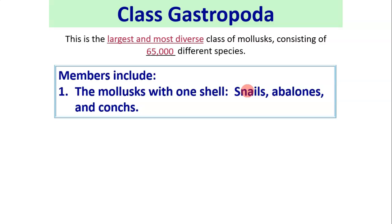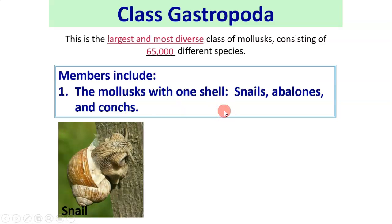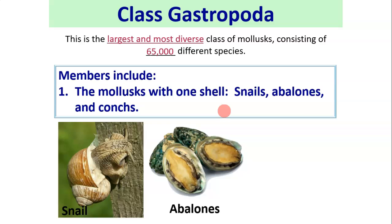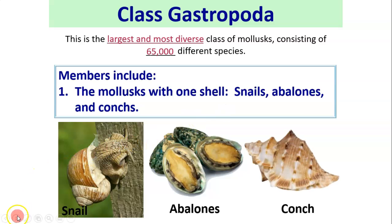The class Gastropoda is the largest and most diverse class, with 65,000 different species. Members include mollusks with one shell, like snails, abalones, and conchs. The conch shell is what's used in Lord of the Flies, for those of you who read that in English. Here's a snail, an abalone, and a conch.